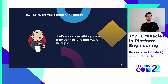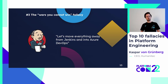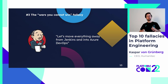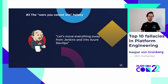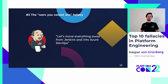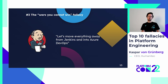Number three, the wars you cannot win fallacy. I see many platform engineering teams saying: the first thing we're going to do is clean up — we're going to take Jenkins away and move everything into Azure DevOps. Well, a lot of your teams have worked with Jenkins for a long time and it might not be the perfect product, but all of the pipelines are there, all of the tests are written, and it's doing the job. Are you sure you're making a material change? So beware of the wars you cannot win fallacy — people do not like to have things taken away from them.